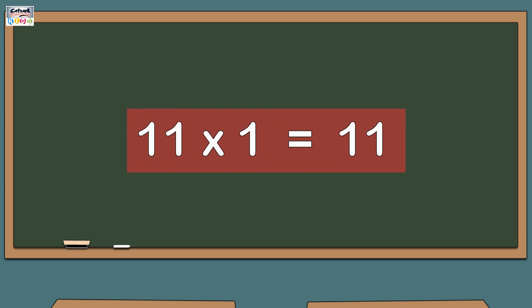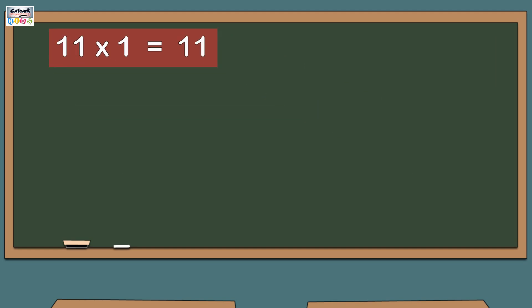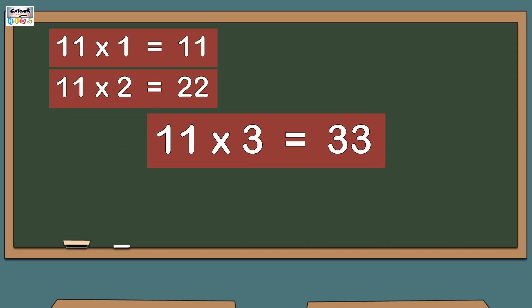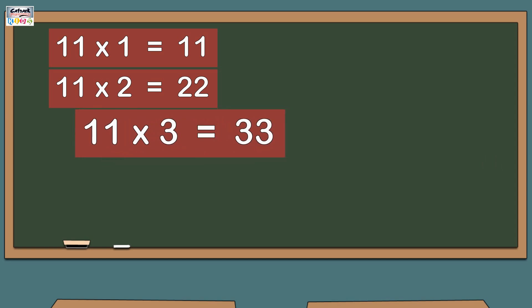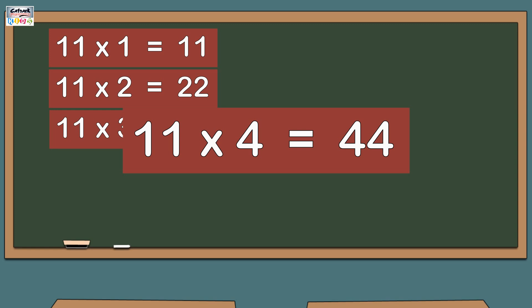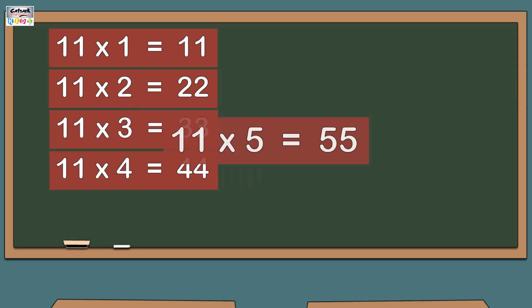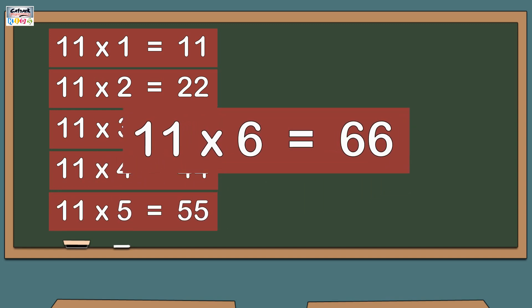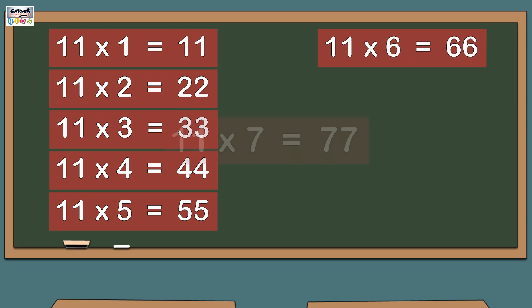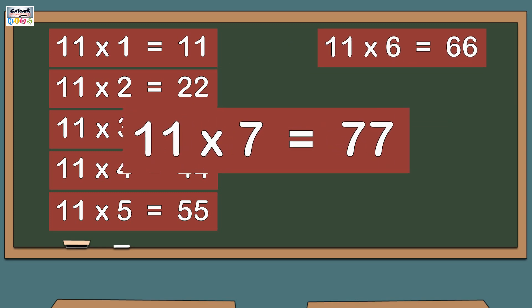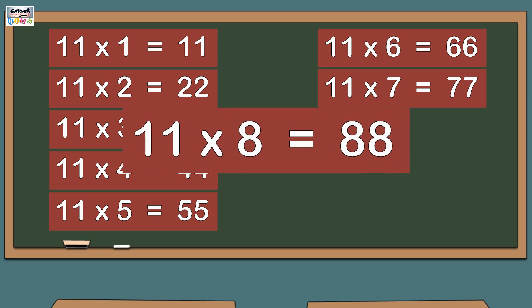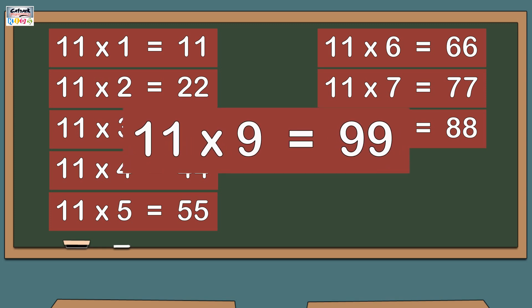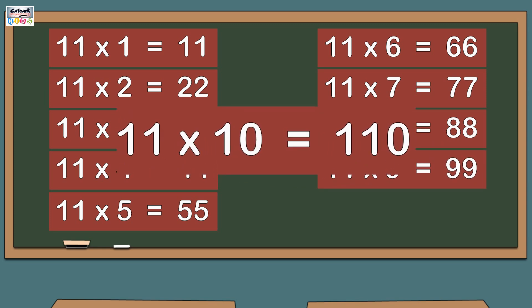11 1s are 11. 11 2s are 22. 11 3s are 33. 11 4s are 44. 11 5s are 55. 11 6s are 66. 11 7s are 77. 11 8s are 88. 11 9s are 99. 11 10s are 110.